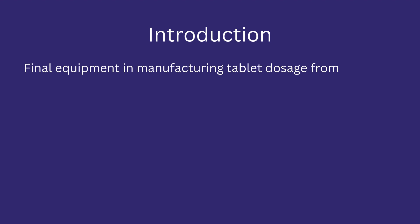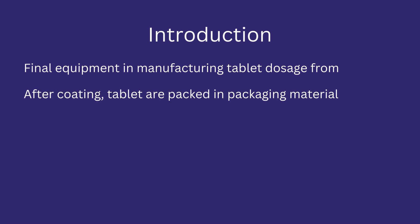Tablet coating is the final line of equipment in the manufacturing of tablet dosage forms. It gives the tablet its final finished physical appearance. After coating, tablets are packed in packaging material for distribution to the end user.